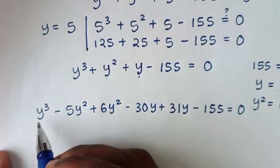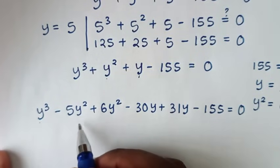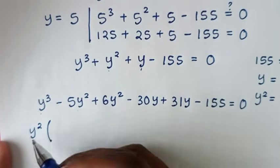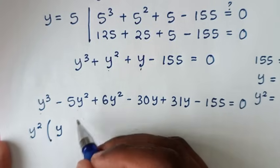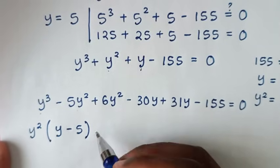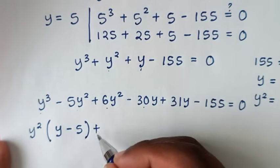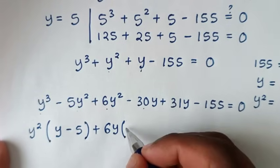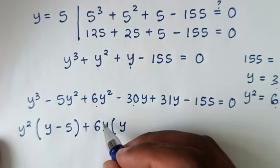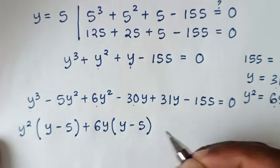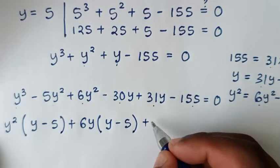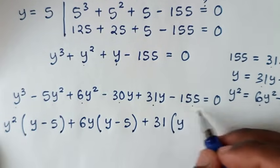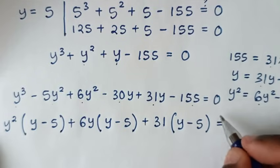From our equation, in y power of 3 minus 5y squared, y squared is common, so we take it out of the bracket. Then y power of 3 divided by y squared is y, and minus 5y squared divided by y squared is minus 5, giving bracket y minus 5. Then we take 6y out of bracket from the next group: 6y squared divided by 6y is y, and minus 30y divided by 6y is minus 5, giving bracket y minus 5. Then we take 31 out of bracket: 31y divided by 31 is y, and minus 155 divided by 31 is minus 5, giving bracket y minus 5, equal to 0.